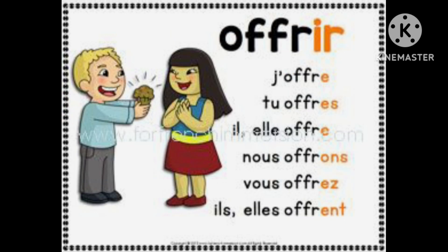Offrir — to offer. Though it is an IR group of verb, it conjugates the same as ER endings: -e, -es, -e, -ons, -ez, -ent. Offrir: j'offre, il offre, elle offre, nous offre, vous offre, il offre, elle offre.